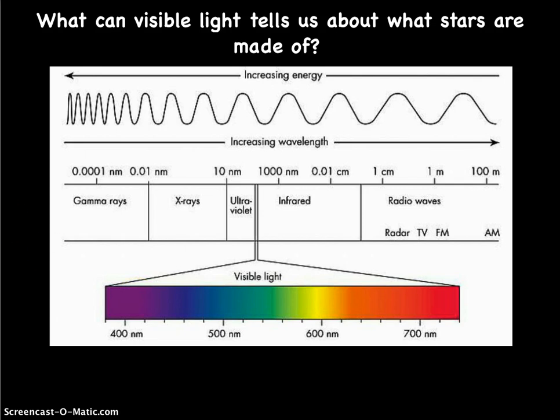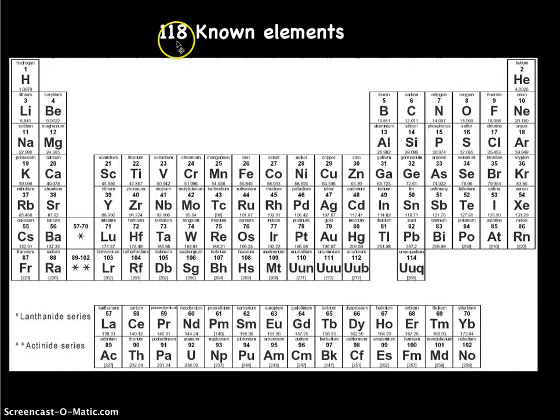So first off, we need to review that when we talk about what things are made out of, we know that there are 118 known elements in the universe, and we organize them on something called the periodic table. Some of the common ones you may know are hydrogen, carbon, nitrogen, oxygen, helium, neon, maybe some of these like iron and copper. So we're going to be looking at elements that we find here on Earth and figure out what the Sun or other stars are made out of.